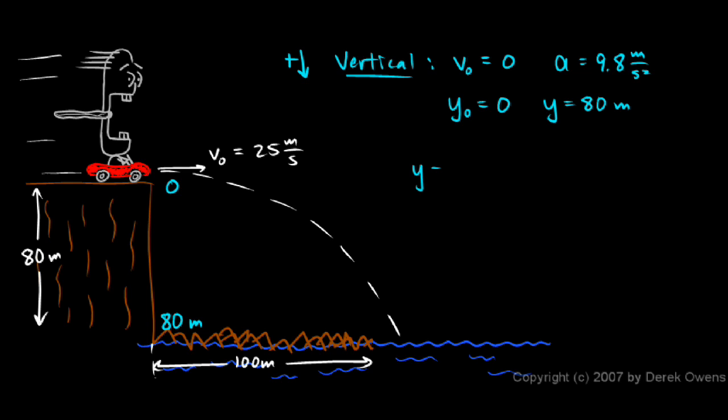Now I can use this equation: y equals y zero plus v zero t plus one half at squared. In this case, the initial velocity was zero, and the initial position is zero. So the equation simplifies to y equals one half at squared. I can solve this for t or for t squared. t squared is 2 times y over a.